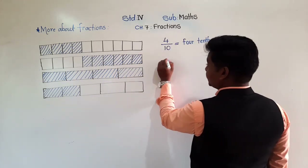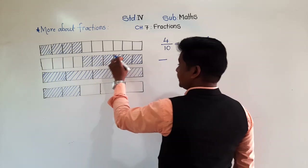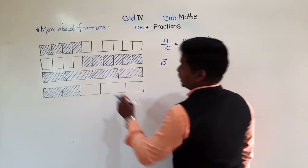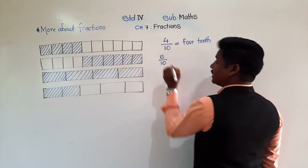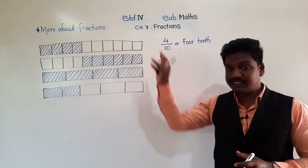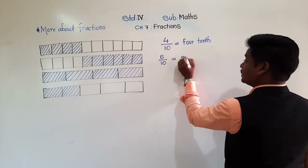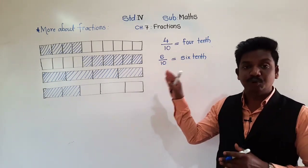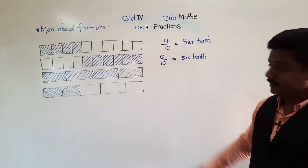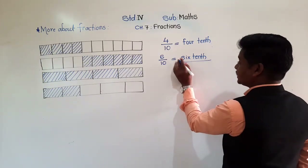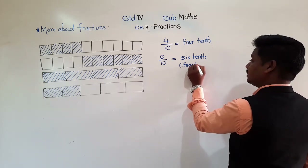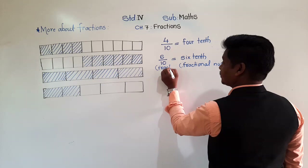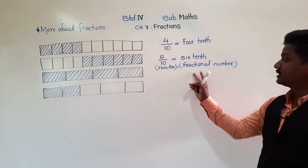The second strip is divided into how many equal parts? 1, 2, 3, 4, 5, 6, 7, 8, 9, 10 — it is divided into 10 equal parts. The total equal parts go right below the bar. And out of 10 equal parts, how many parts are shaded? 1, 2, 3, 4, 5, 6 — 6 parts are shaded. So the fraction for the shaded portion of the second strip is 6 tenths. This is the fraction and '6 tenths' is the fractional number.